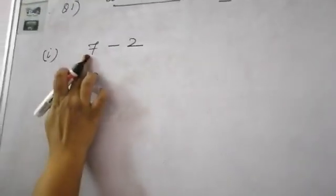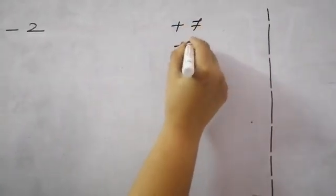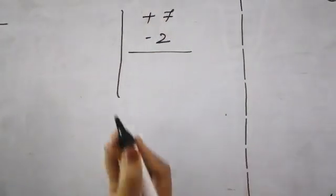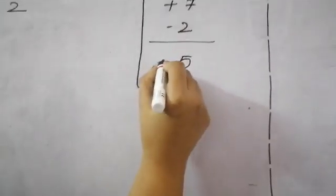First question. 7 minus 2 plus 7. Do the side work better. Plus 7 minus 2. Two different signs. We know you have to subtract and give the bigger number sign. So draw the number line first.